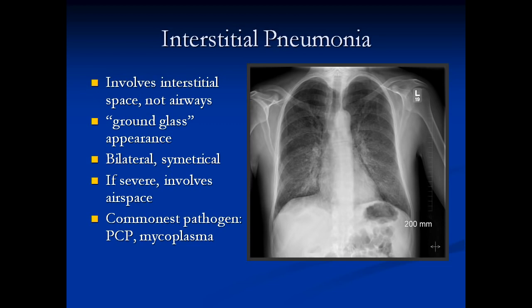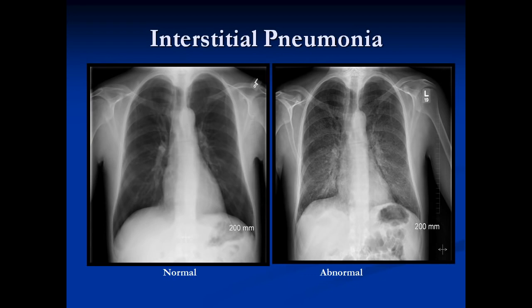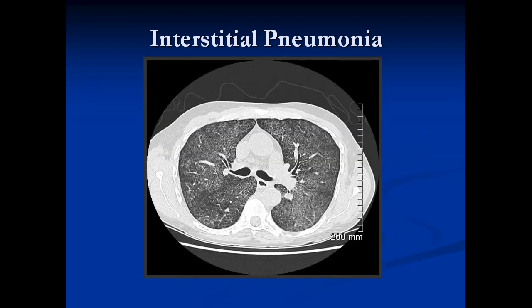If severe, the interstitial pneumonia can go on to airspace disease. These are called atypical pneumonias, and the commonest pathogens are PCP, mycoplasma, viruses, and other atypical pathogens. Here we have a normal alongside a very early interstitial pneumonia — sometimes it's extremely difficult for the clinician or emergency doctor to tell whether there's interstitial disease or not, and it's very helpful to have a previous film for comparison. We see some very mild interstitial changes. Later on, you have the bilateral symmetrical ground glass, sparing the periphery, with no silhouette sign — this is an interstitial pneumonia. On CT scan it just looks like ground glass everywhere.